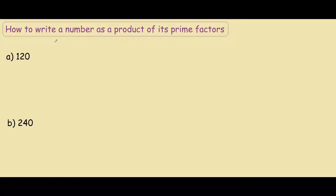If you want to write a number as a product of its prime factors, what you want to do is look at the number and divide by the smallest prime possible. So if we go through this example of 120, the smallest prime that will go into 120 is 2.